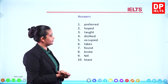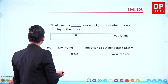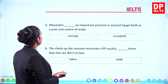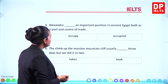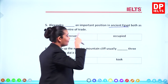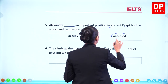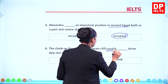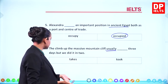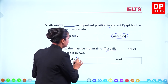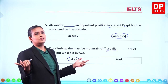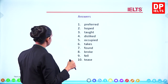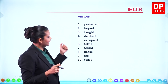Sentence five: 'Alexandra occupied an important position in ancient Egypt both as a port and centre of trade.' Ancient Egypt is in the past, so 'occupied.' Sentence six: 'The climb up the massive mountain cliff usually takes three days, but we did it in two.' Usually means at present, so 'takes.' Answers five and six: occupied and takes.